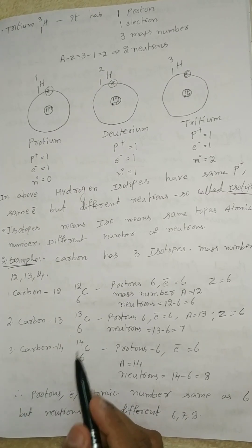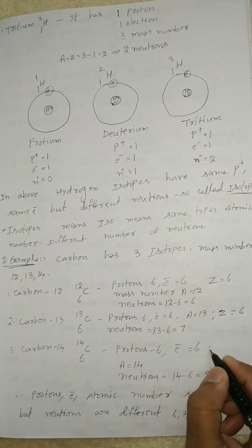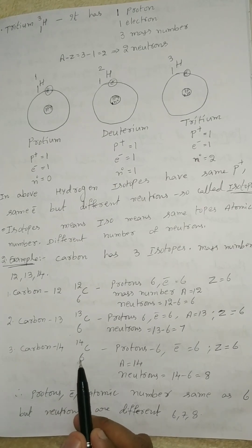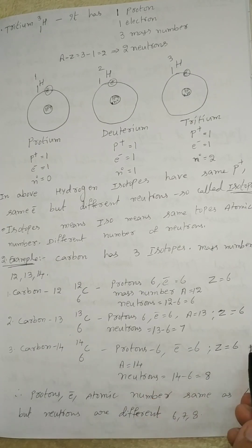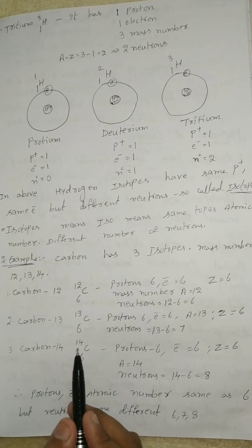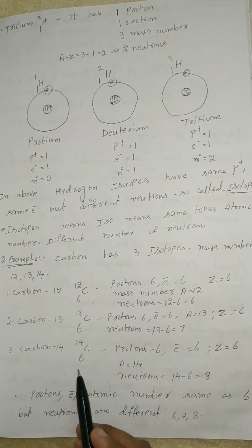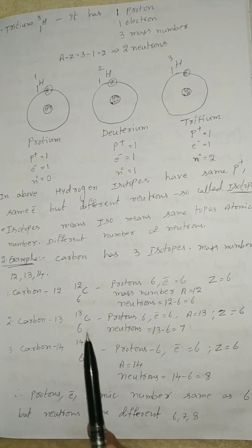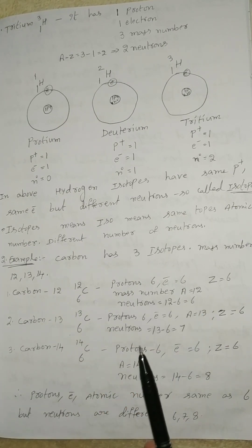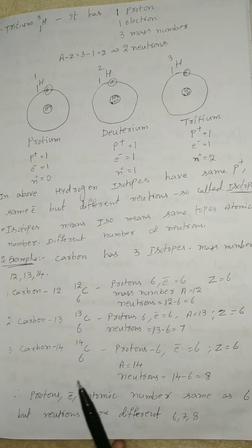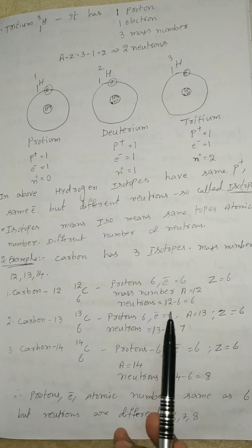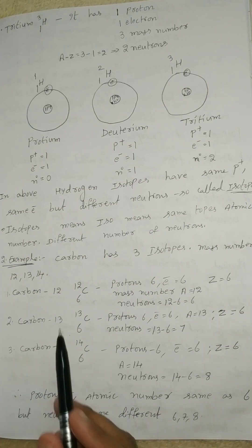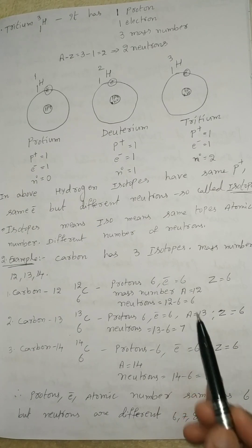Next, carbon-14: 6C14. Atomic number Z equals 6, protons 6, electrons 6. Mass number A equals 14. Neutrons equal to A minus Z: 14 minus 6 equals 8. So neutrons are 8. In these three carbon isotopes, protons, electrons, and atomic number are the same — 6 — but the neutrons are different: 6, 7, and 8.